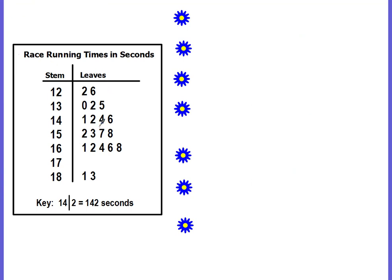We're going to have more questions based on a new stem and leaf plot. Take a look at this stem and leaf plot — how is it different than the one we just did? The stems are now two digits. So the leaves are still going to be the ones place, but the stem is now going to be the tens and the hundreds place — they go into hundreds. The key tells you: fourteen as a stem with two as your leaf equals one hundred and forty-two. And since we're talking about running time, it's in seconds. Pause the video and see if you can answer on your own, then play it and check.